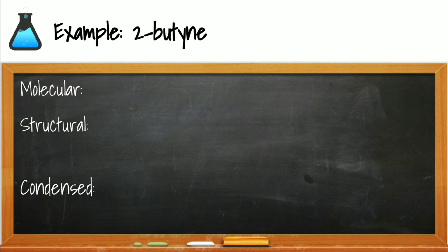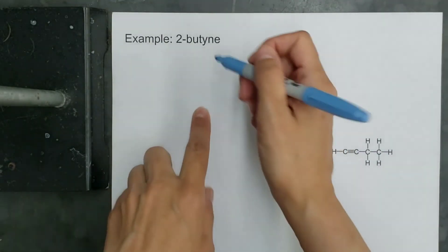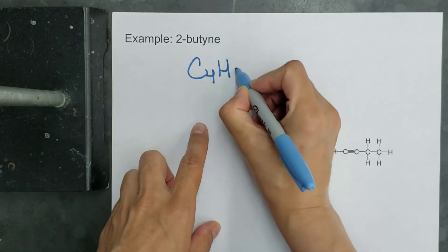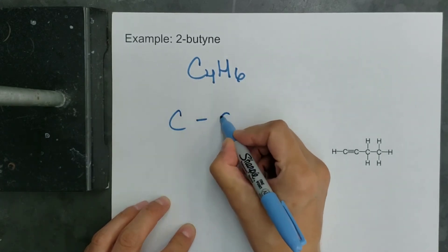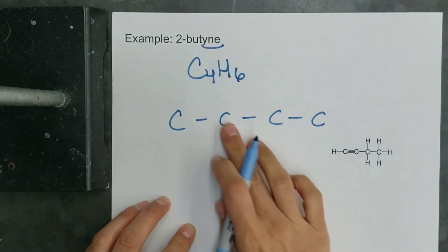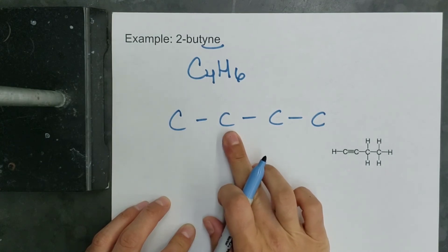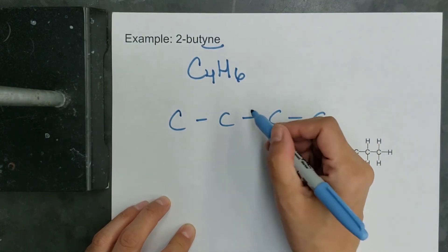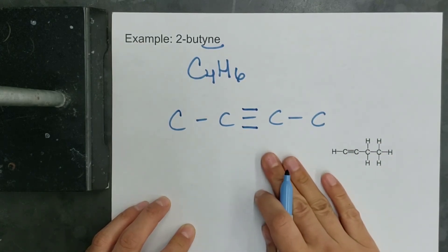Now we can compare this to 2-butyne. All butynes have the same general formula. We string our four carbons together but this time the triple bond extends beginning at the second carbon and going to the third. This gives 2-butyne a different structure and therefore different properties than 1-butyne.